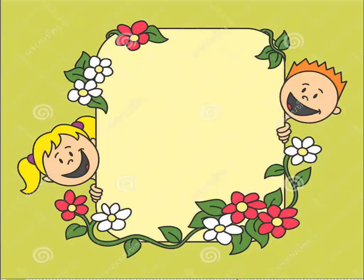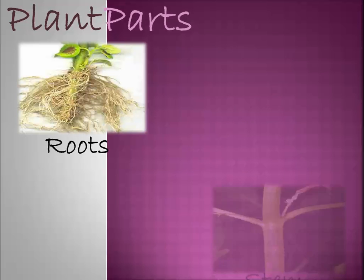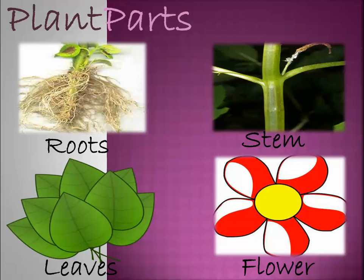Now we're going to revise the lesson from last week — it was about plants. The plant parts consist of four main parts: roots, stem, leaves, and flower.